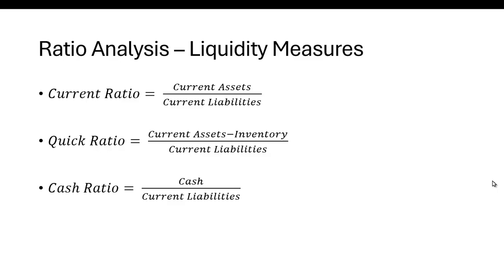So you have to gauge these. For the current ratio, we look at current assets divided by current liabilities. Current assets are things like cash, accounts receivable, inventories, and marketable securities — things you expect to turn to cash within a year. Cash is already cash, you expect to collect on accounts receivable, you can cash out marketable securities anytime, and you expect to sell that inventory.